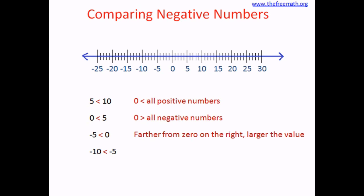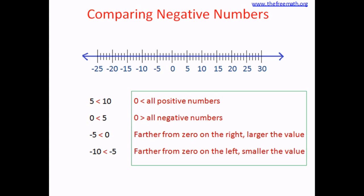What happens if you go left from 0? The more left you go, the smaller the value. So negative 10 is smaller than negative 5, negative 25 is smaller than negative 10, and negative 1000 is smaller than negative 25. The farther from 0 on the left you go, the smaller the value. These are the important rules and they are quite easy to understand.